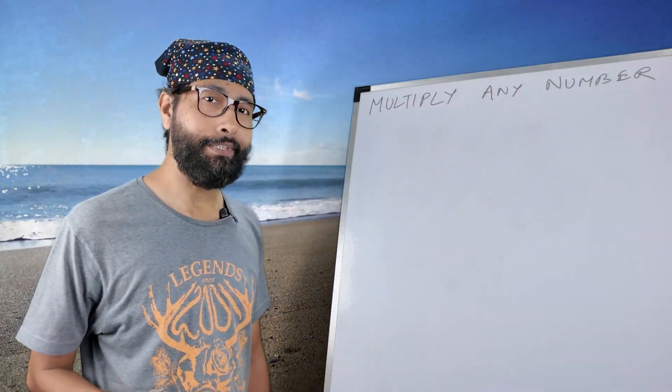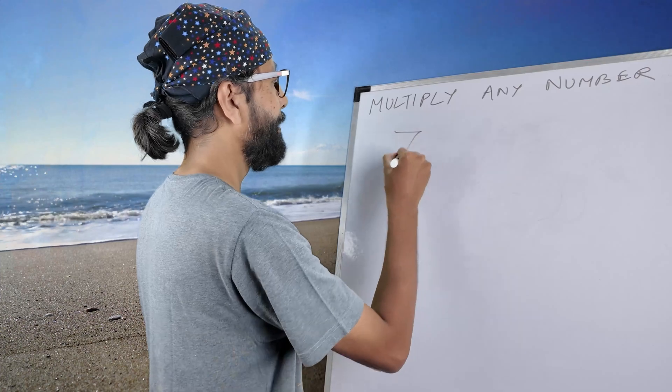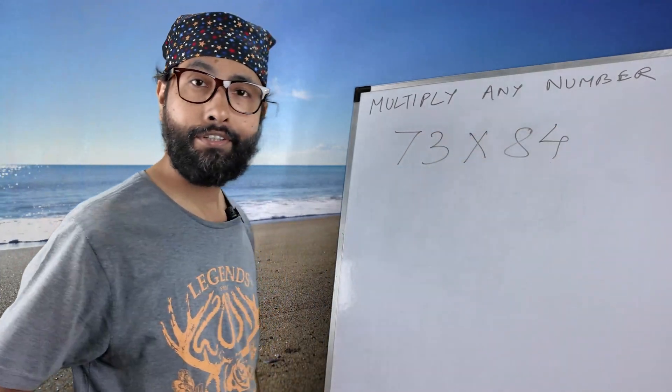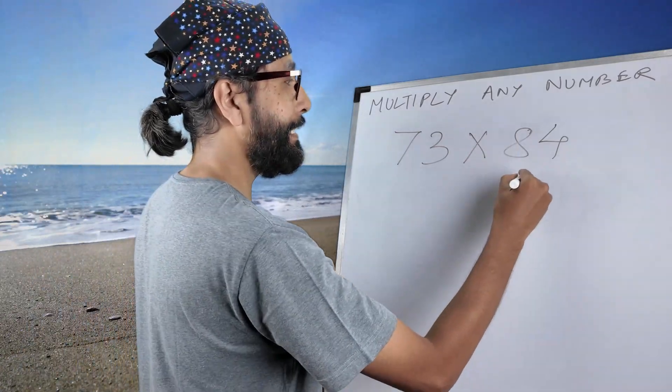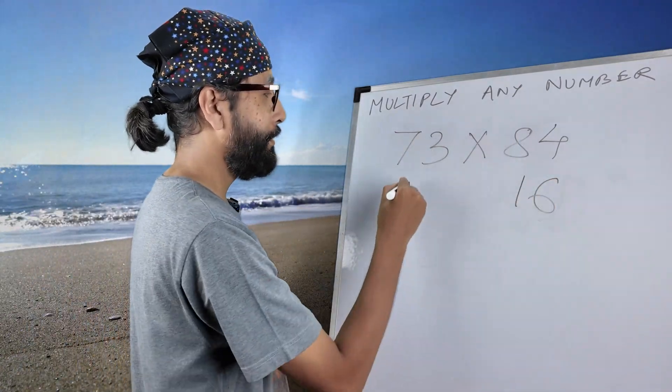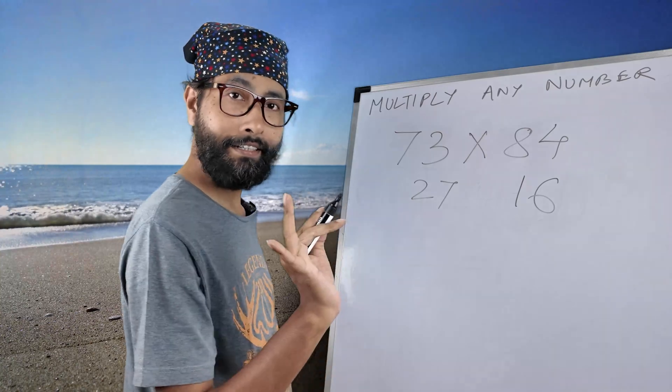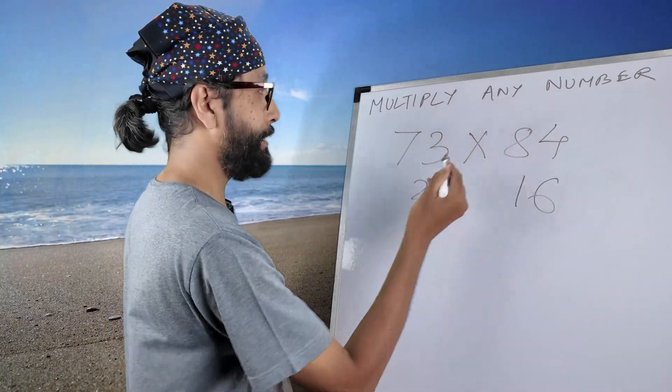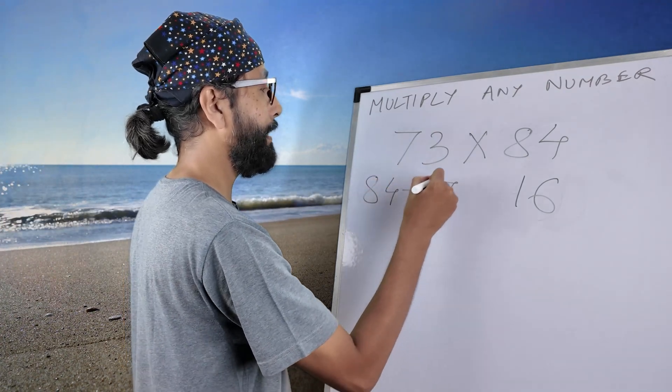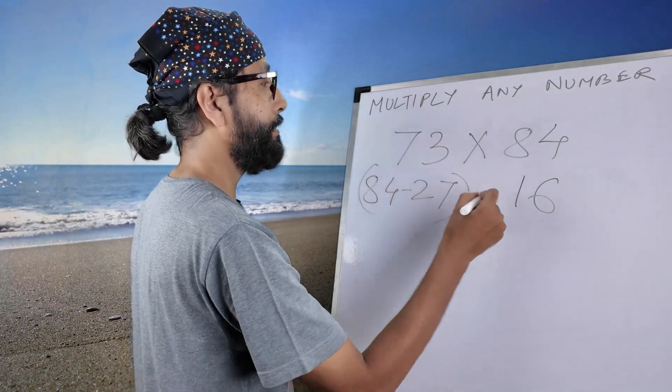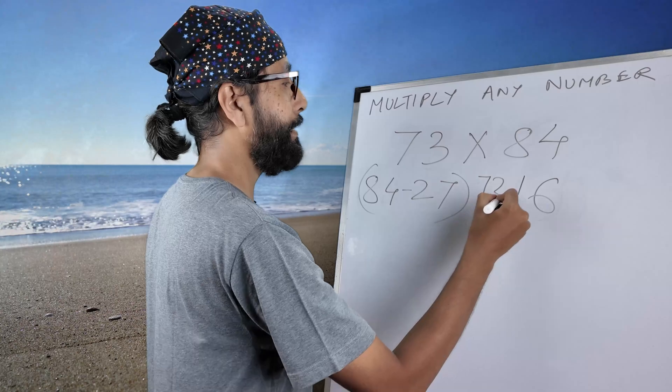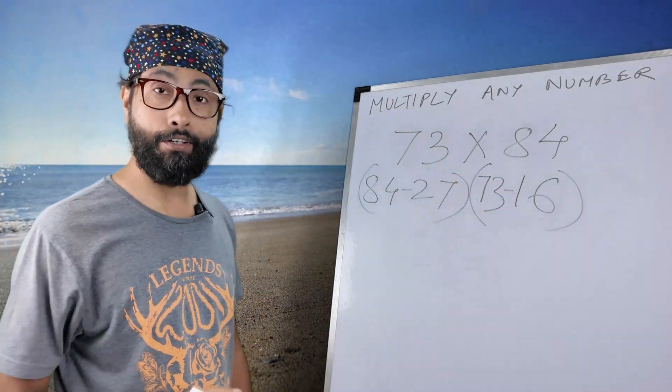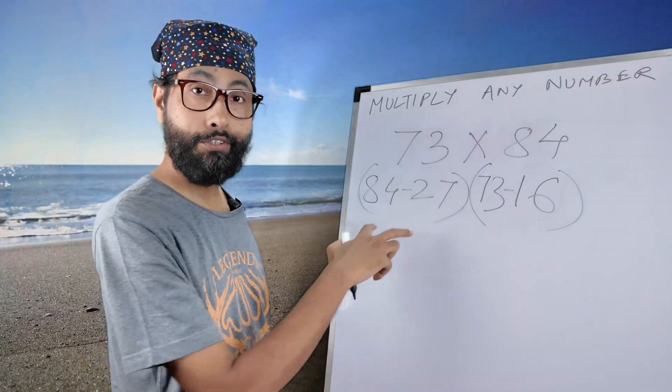Let's dive deeper. Something like 73 multiplied by 84. This is 16, this is 27. Simple. So these two numbers have to be switched, we know this, right? 84 minus 27 is 73. So now what is the value? 57.